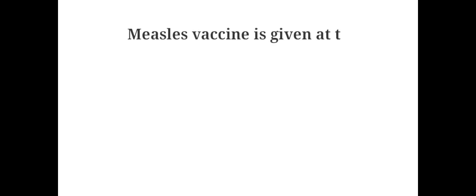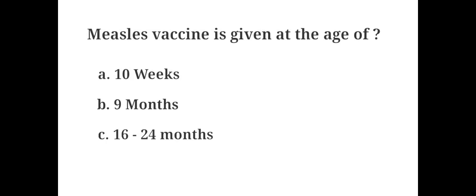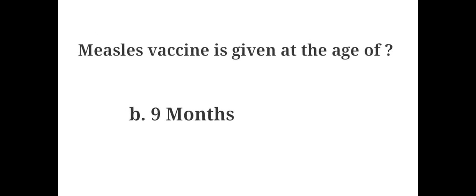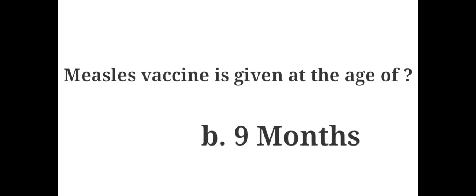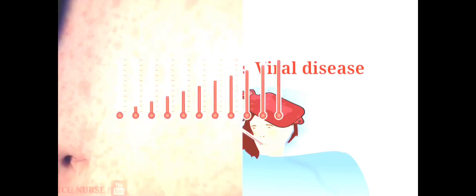Measles vaccine is given at the age of: A. 10 weeks, B. 9 months, C. 16 to 24 months, D. 14 weeks. The answer is B. 9 months. Measles is an infectious viral disease causing fever and a red rash, typically occurring in childhood.